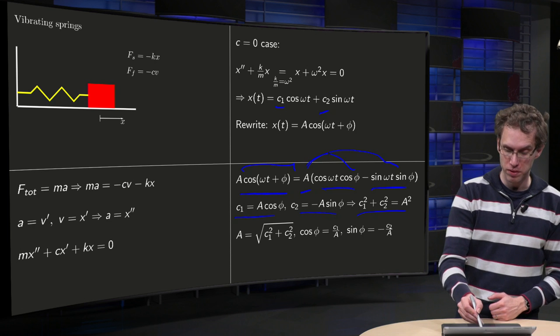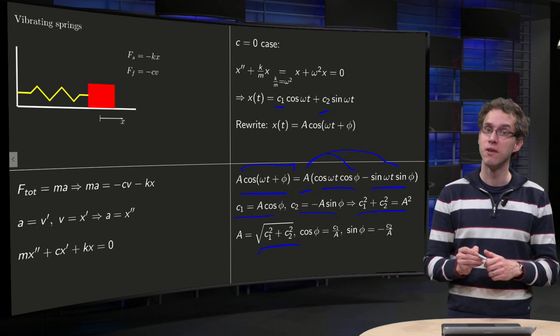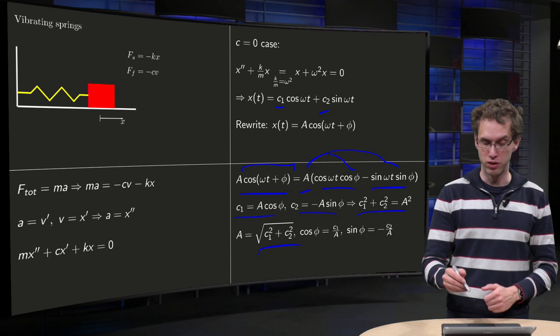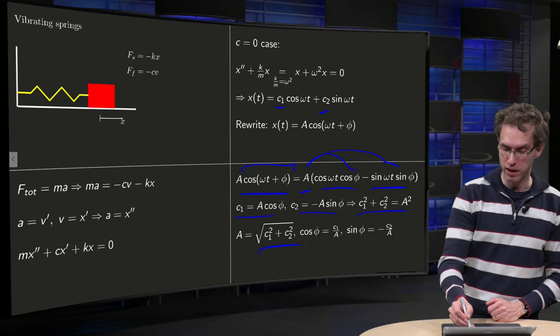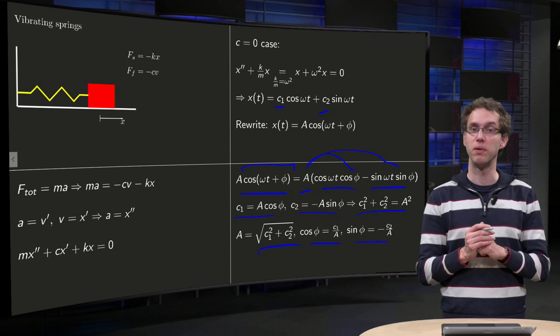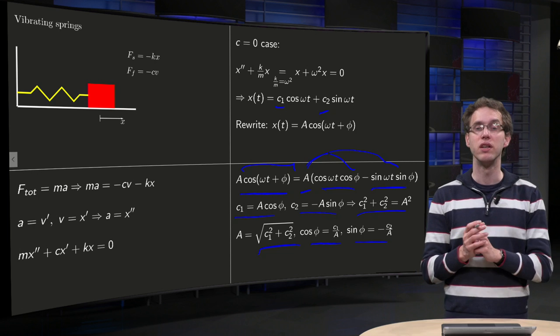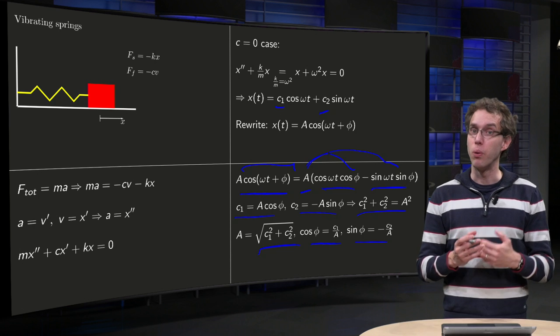As the square root of c one squared plus c two squared, and then phi is determined by the equation: dividing by A, cos phi equals c one over A, sin phi equals minus c two over A, so that's how you could determine your phi.